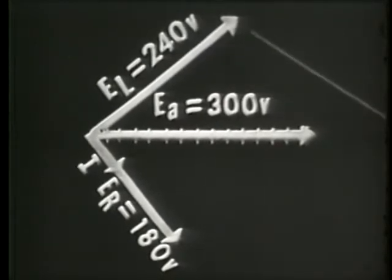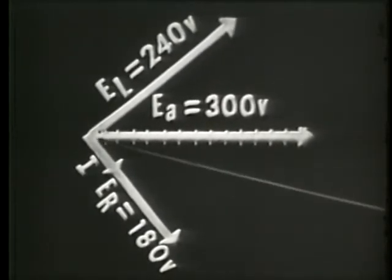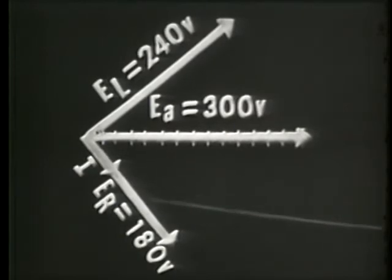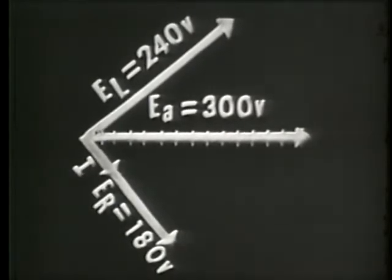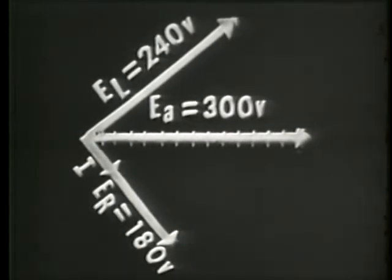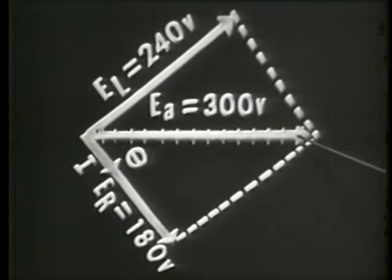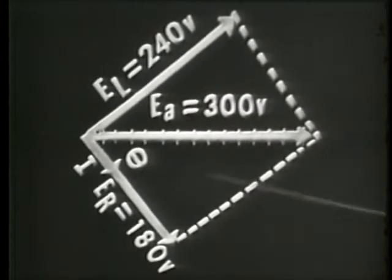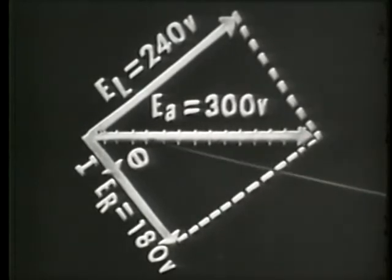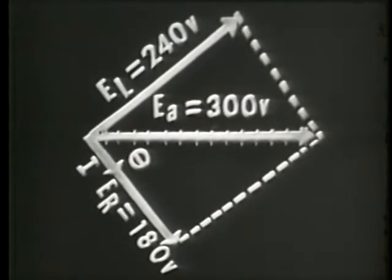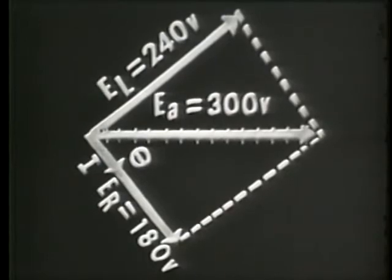If we then construct a parallelogram from the inductor voltage and resistor voltage vectors, we find that the resultant vector is the 300 volts — the voltage applied. And here is theta, the phase angle, with the current lagging the applied voltage by 53 degrees.